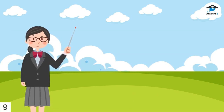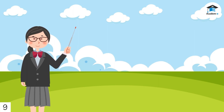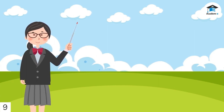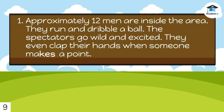Let's see how well you understood the lesson. Read each situation and make an inference about what the situation is about. 1. Approximately 12 men are inside the area. They run and dribble a ball. The spectators go wild and excited. They even clap their hands when someone makes a point.